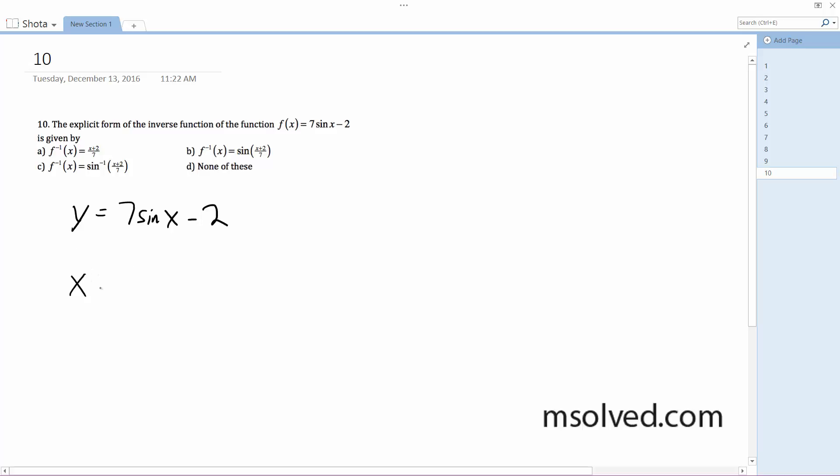Alright, so to do that, let me swap the variables: x is equal to 7 sine of y minus 2.